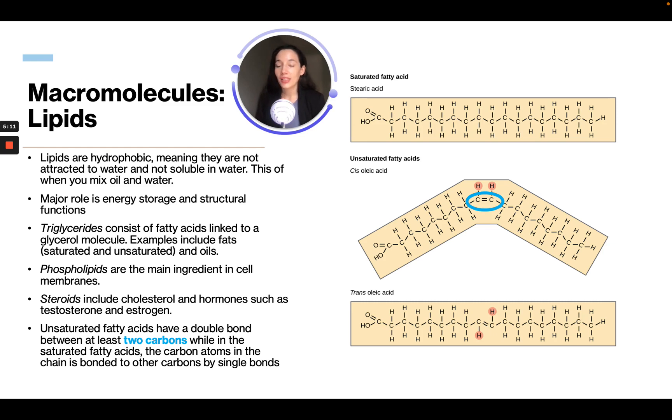Triglycerides consist of fatty acids linked to a glycerol molecule. Examples include fats, such as saturated or unsaturated oils. Phospholipids are the main ingredient in a cell membrane. We talked about that, the phospholipid membrane. And steroids include cholesterol and hormones, such as testosterone and estrogen.